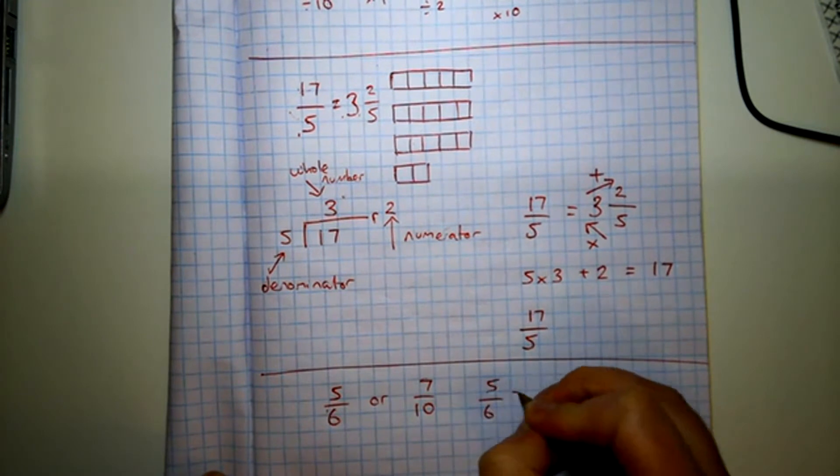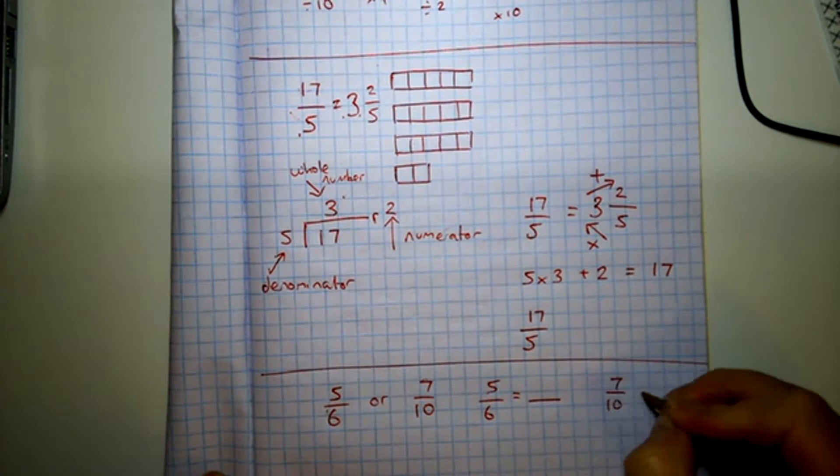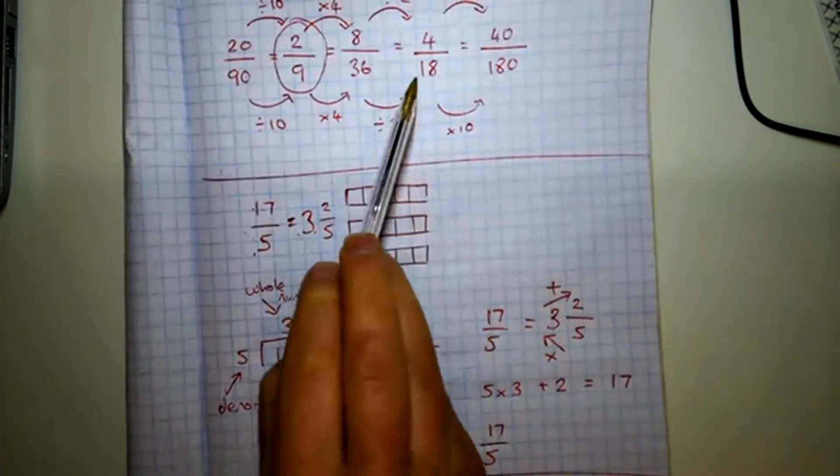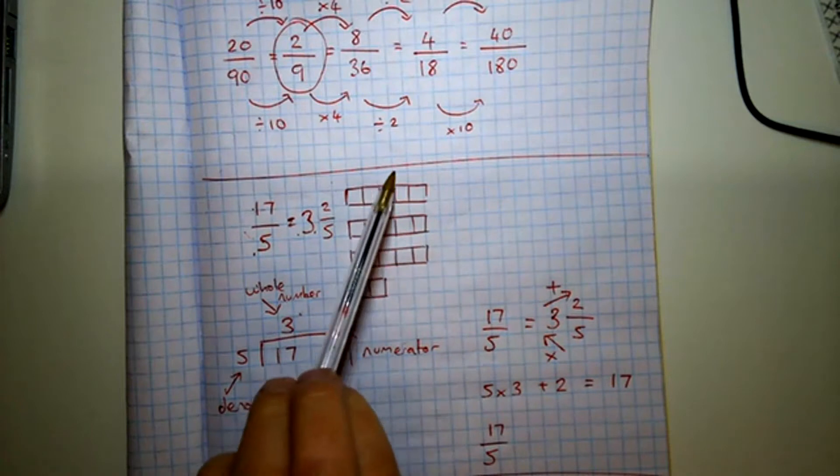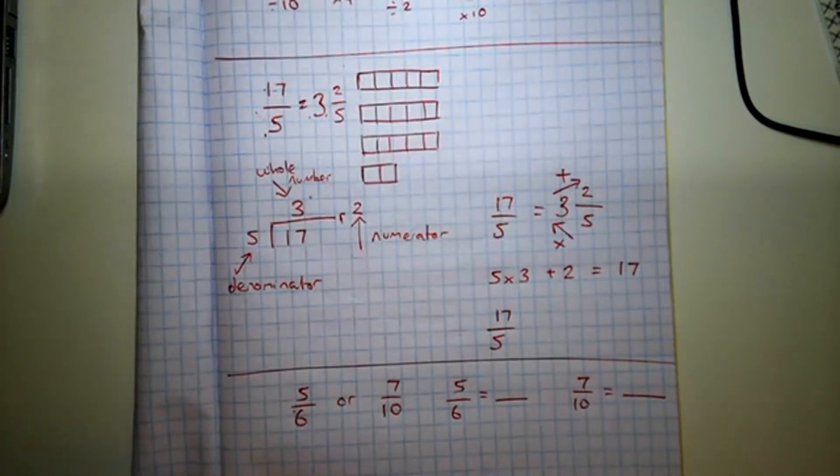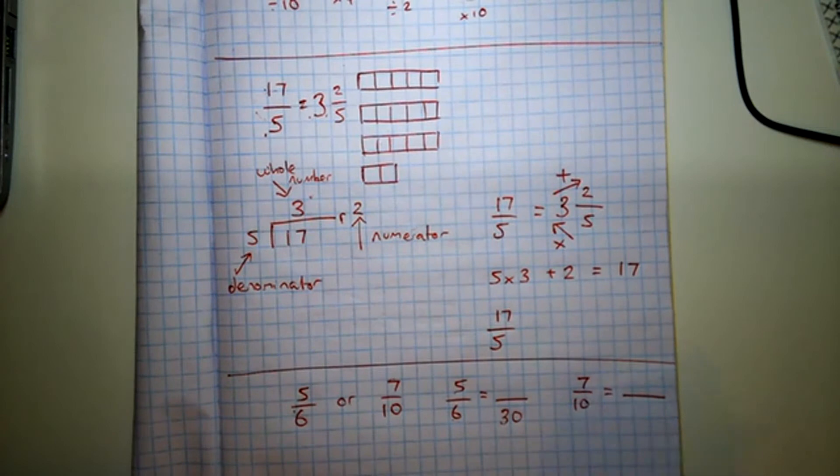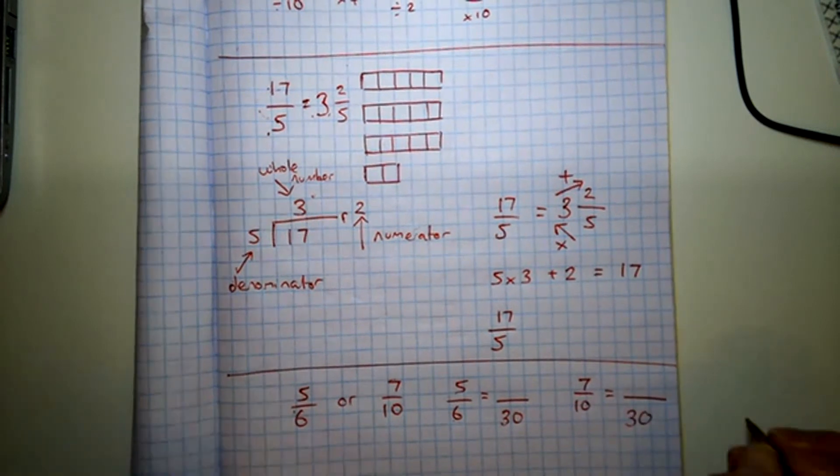So five sixths and seven tenths. We've got to write as equivalent fractions using the skill we did at the top. But we're not being told what to do. And we're not being told what any of the numbers are. We've got to find a common number. So a number that 10 and 6 both go into. And that number would be 30. It's the lowest common multiple of 10 and 6.